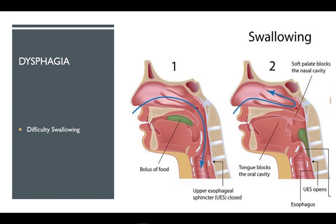The swallowing process is much more complicated than most think. There are many parts to the swallowing process that involve forming a bolus, moving it to the back of the throat, and down into the esophagus. In the process, the epiglottis closes on top of the trachea, preventing food or drink from entering the lungs.